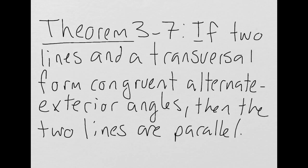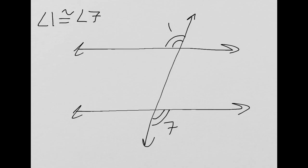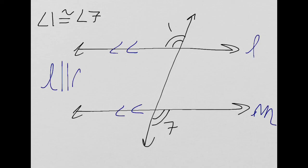Last but not least, we have theorem 3-7, the converse of the alternate exterior angles theorem. It says if two lines and a transversal form congruent alternate exterior angles, then the two lines are parallel. The alternate exterior angles theorem says if two lines are parallel and cut by a transversal, then the alternate exterior angles are congruent — this is its converse. In this diagram, if angle 1 and angle 7 are congruent, then by theorem 3-7, lines L and M are parallel.